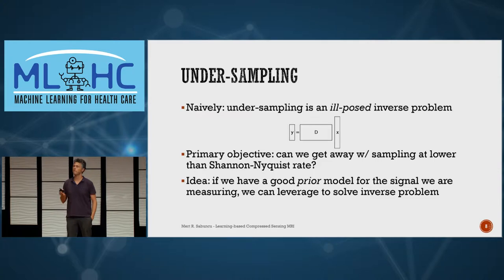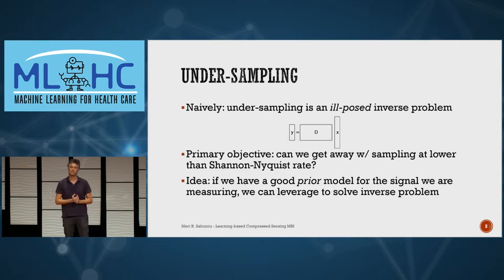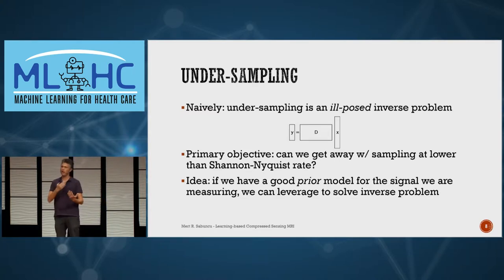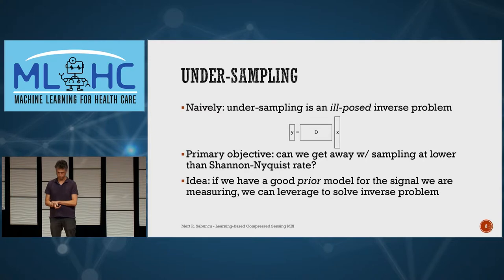This is a classical ill-posed inverse problem. We have measurements y — a short vector because we're undersampling — and there's an underlying latent long vector x that we want to recover, reflecting the fully sampled signal. A sampling process, which is a short fat matrix d in a linear model, relates x to y. We observe y, we know d, we want to recover x. There are infinitely many x's consistent with the observed y, so we use a prior model to pick the most likely x.